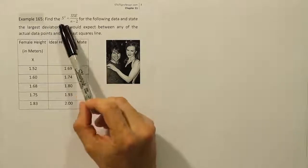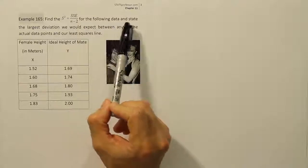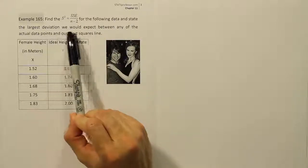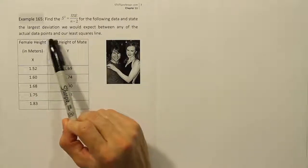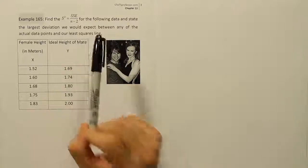Example 165. Find S squared for the following data and state the largest deviation we would expect between any of the actual data points in our least squares line.